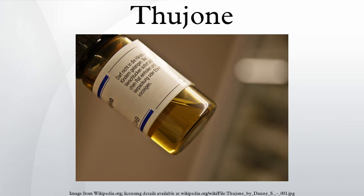The compound was discovered after absinthe became popular in the mid-19th century. Dr. Valentin Magnan, who studied alcoholism, tested pure wormwood oil on animals and discovered it caused seizures independent from the effects of alcohol. Based on this, it was assumed that absinthe, which contains a small amount of wormwood oil, was more dangerous than ordinary alcohol. Eventually thujone was isolated as the cause of these reactions.